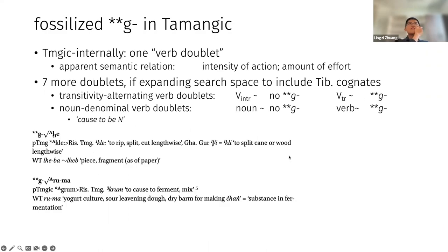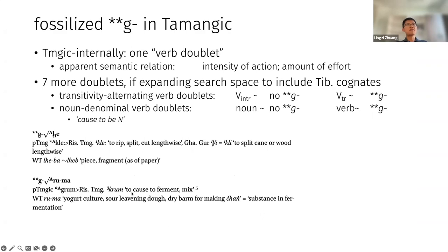The second type is noun-verb doublets. Here the noun is the one without the G, and the verb containing G is a denominal verb — specifically meaning 'cause to be' whatever the noun is. For example, 'hleba/hleb' means 'a piece or fragment,' while 'sle' in Tamang means 'to rip something — to cause something to become fragments.' Another nice example: 'ruma' means 'yogurt culture or leavening dough' — fermentation material — and in Tamangic there is a verb 'groom' meaning 'to cause to ferment, to cause something to become fermentation material.'